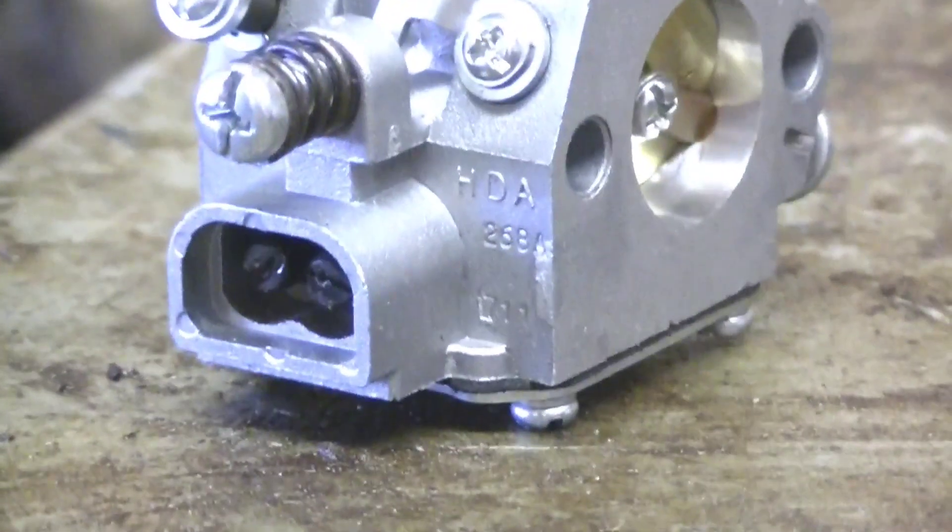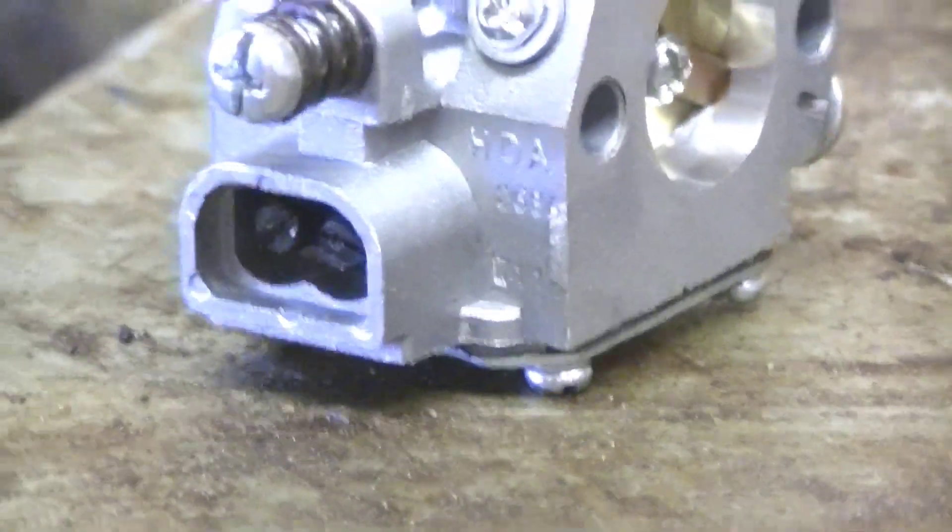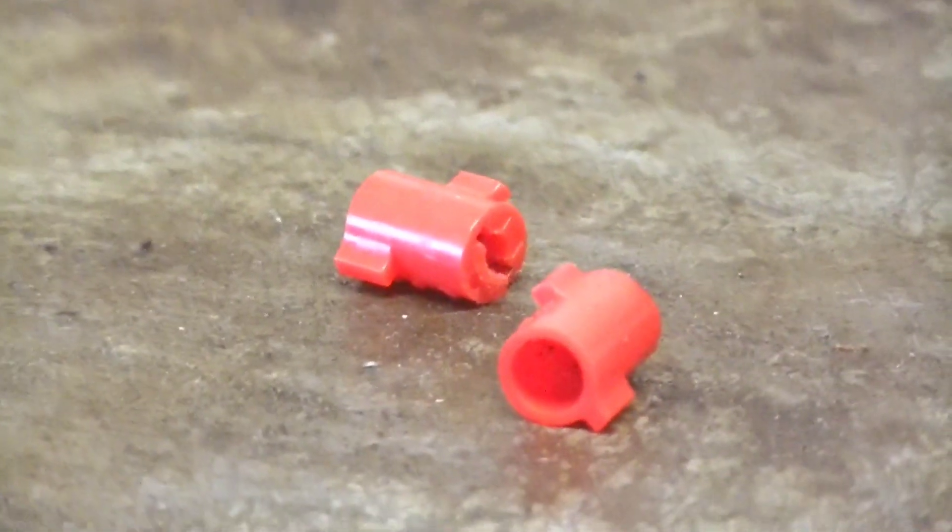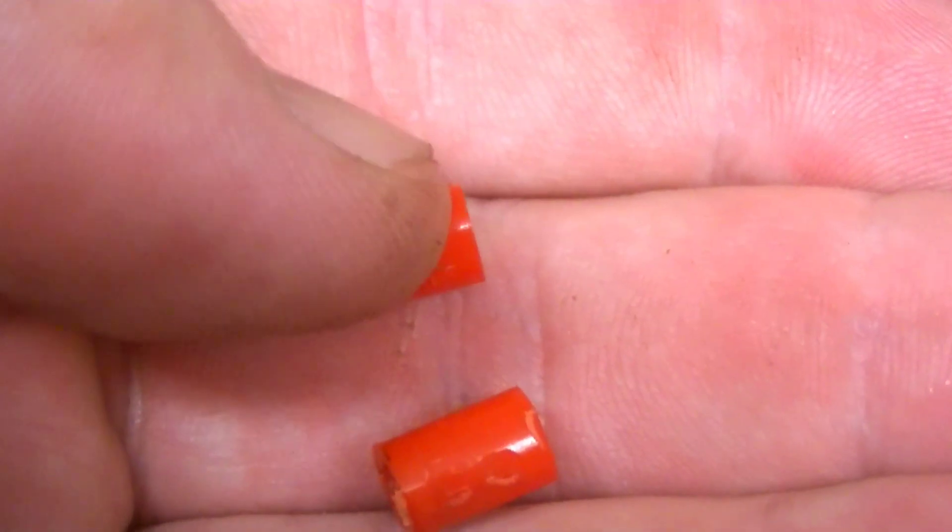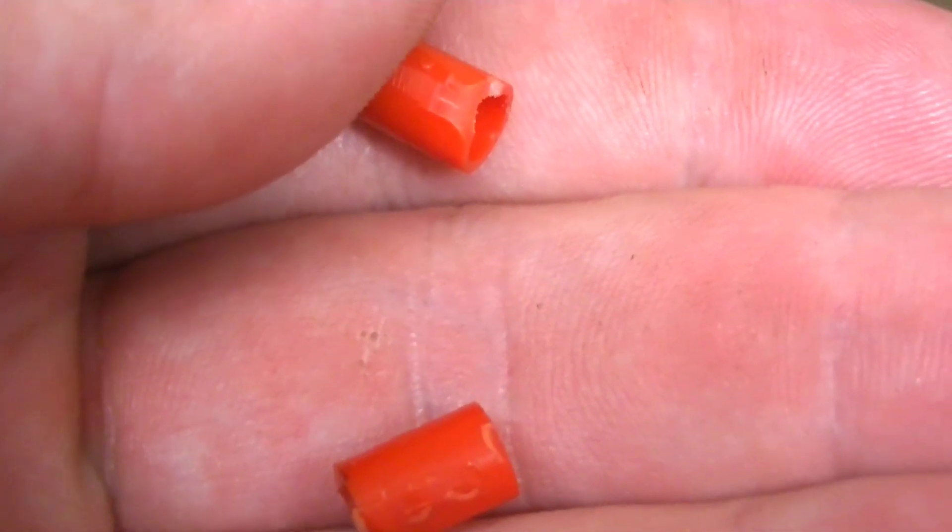like many other people who run these Echos will tell you, these caps do make the screws a bit easier to find when you're adjusting the saw while it's running. And when you're done shaving them, they'll look a little something like this.